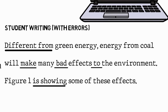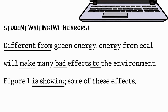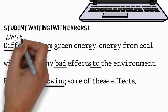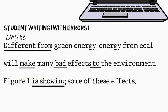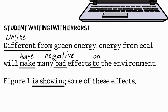With that information, we should now be able to correct the errors in the student writing. The first is a bit difficult because although we saw that 'different from' can't begin a sentence, we didn't see alternatives — the word 'unlike' can be used here: 'Unlike green energy'. For the other problems: instead of 'make', use the verb 'have' — 'have many adverse effects' or 'negative effects on the environment'. And 'Figure one shows some of these effects', or we could say 'illustrates'.